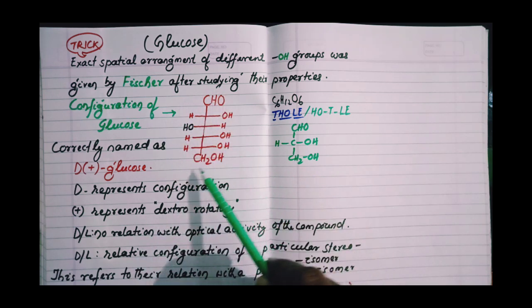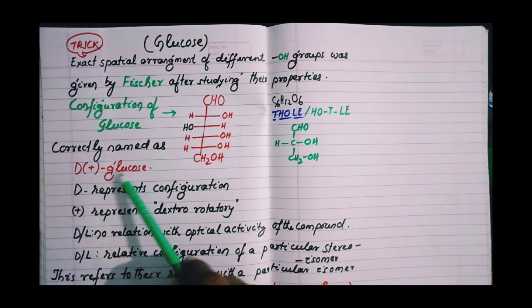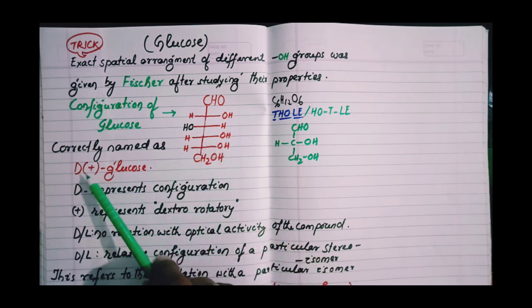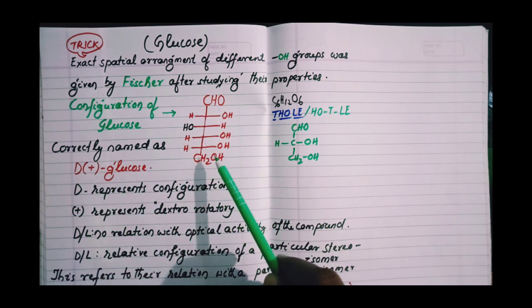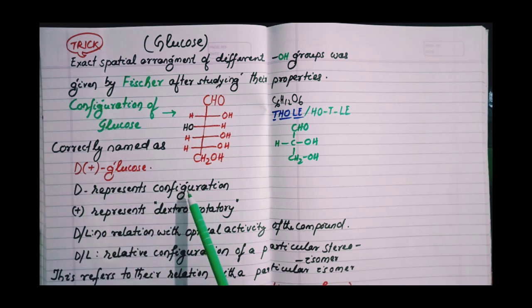The name of this glucose is given D-glucose. D means configuration and plus means this compound is dextrorotatory. D represents configuration and plus represents dextrorotatory.